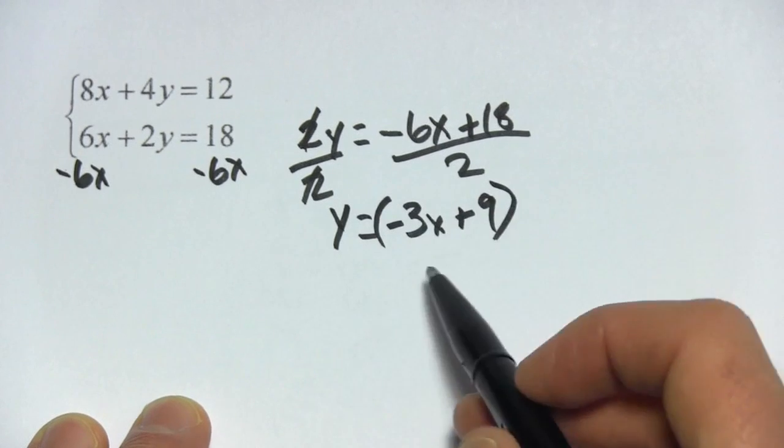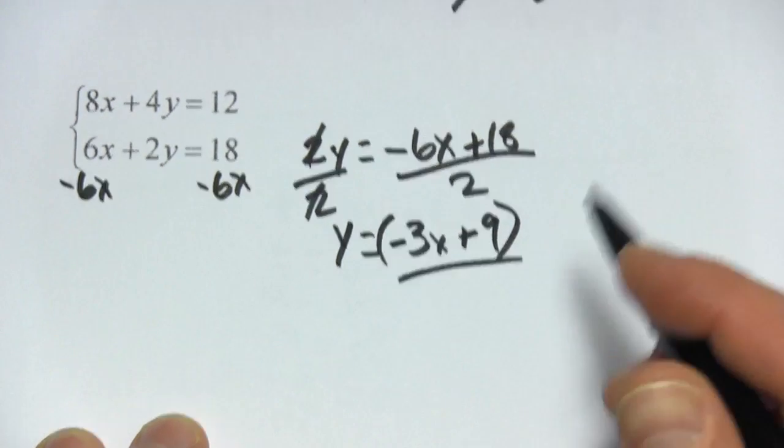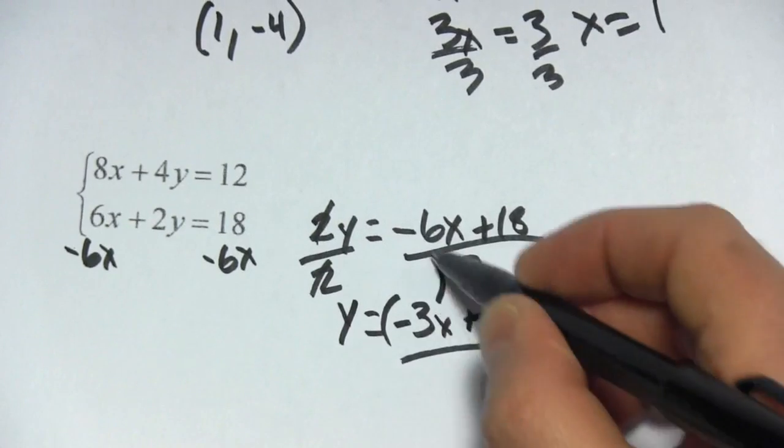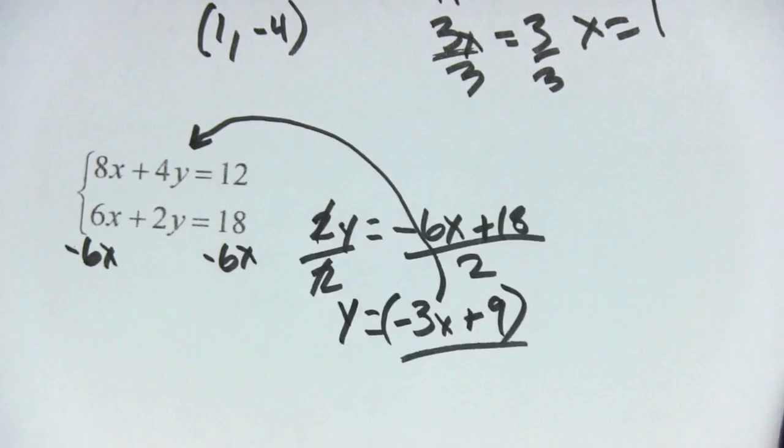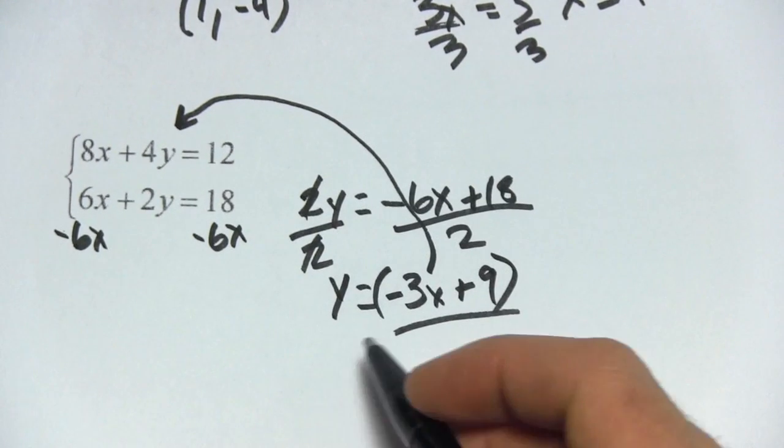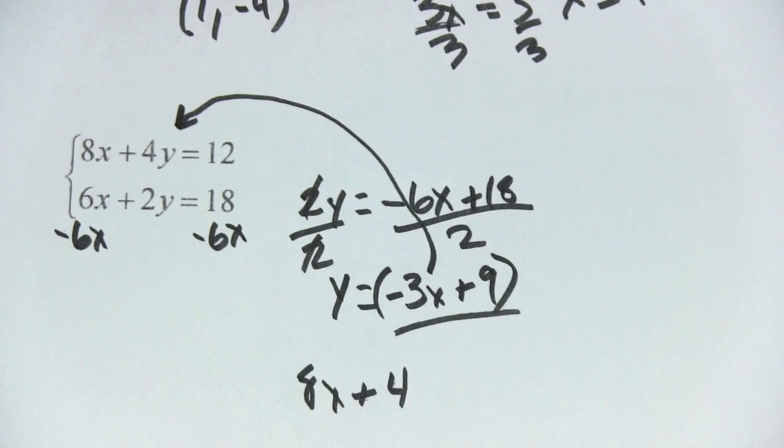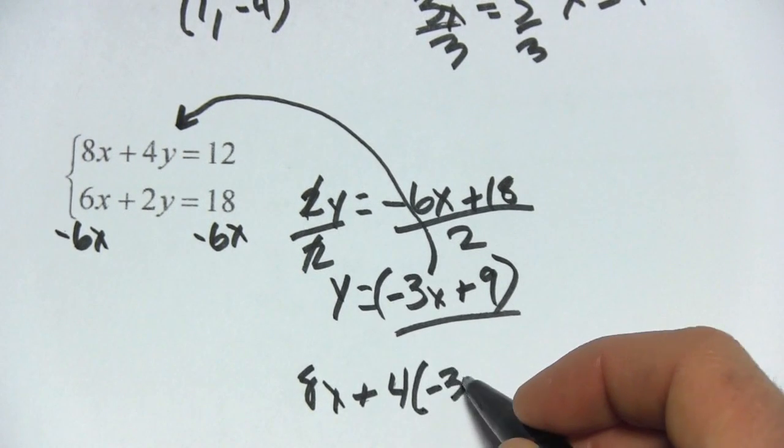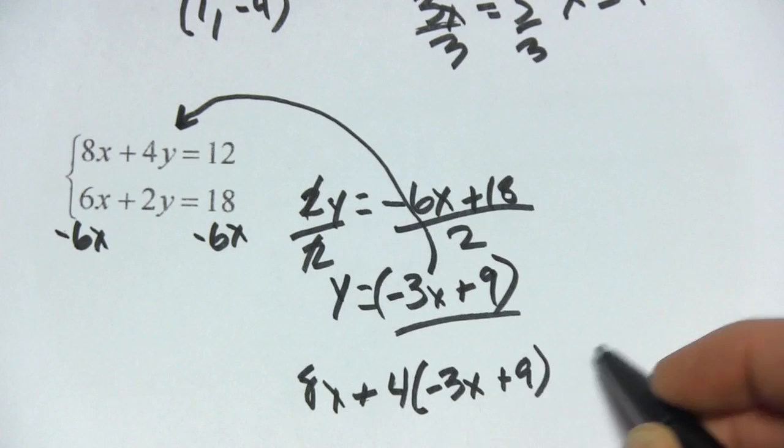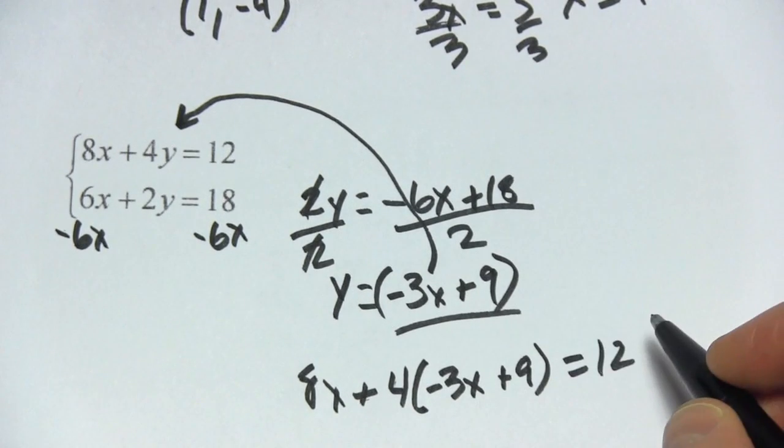So here is our value for y. Let's go ahead and substitute that in the other equation up here. So I'm going to rewrite that equation. We're going to get 8x plus 4 times y, so that's times negative 3x plus 9. And that equals 12.